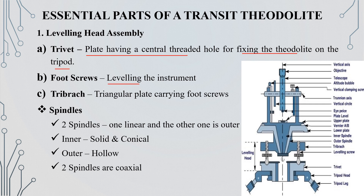The tri-bar is a rectangular plate. This is the fruit screws component. The essential part of the spindles: there are two spindles — the inner spindle and the outer spindle. The inner spindle is solid and conical. The outer spindle is hollow. The two spindles are coaxial.